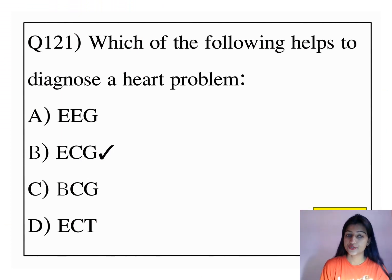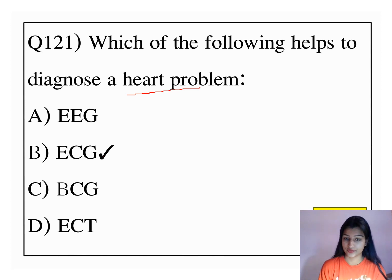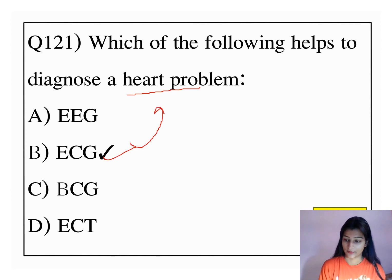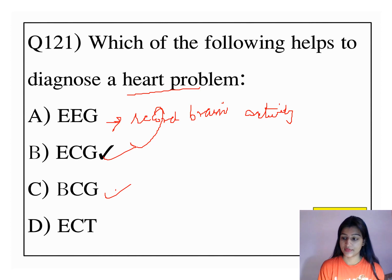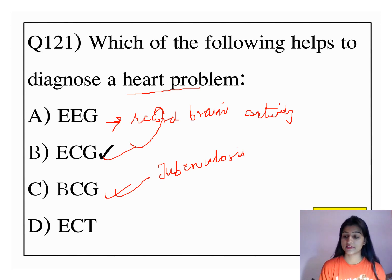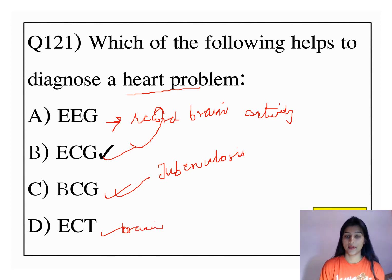Which of the following helps to diagnose a heart problem? The answer is electrocardiogram. This is used to diagnose a heart problem. EEG is used to record brain activity. BCG is used as a vaccine for tuberculosis. And ECG is again used for the heart.